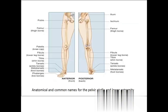The pelvic girdle consists of three bones: ilium, pubis, and ischium — also called the hip bone. The femur is the thigh bone. The lower leg has tibia (near the body) and fibula (away from the body), similar to the radius and ulna. Each foot has seven tarsal bones, five metatarsals (foot bones), and 14 phalanges (finger/toe bones).